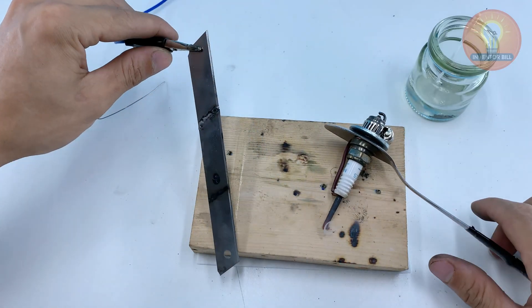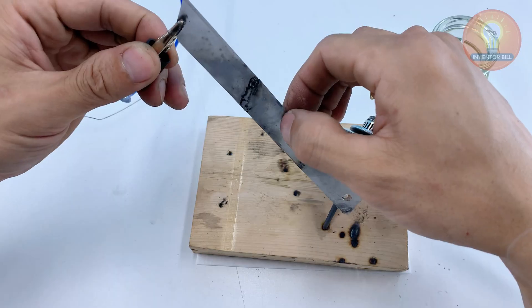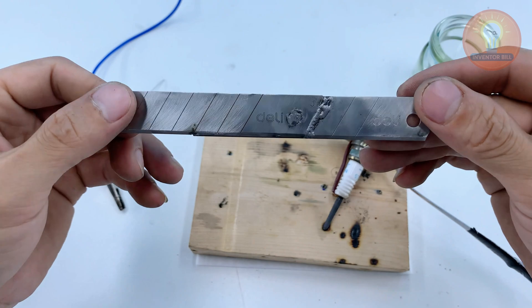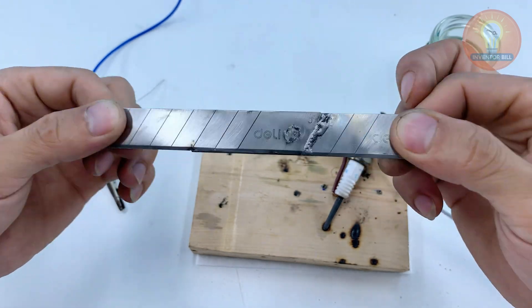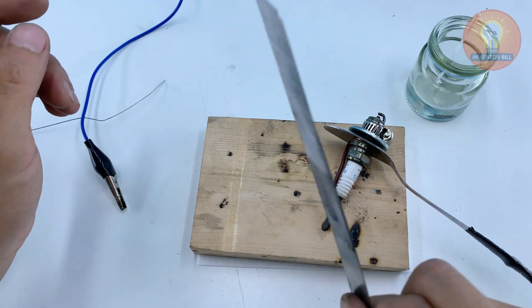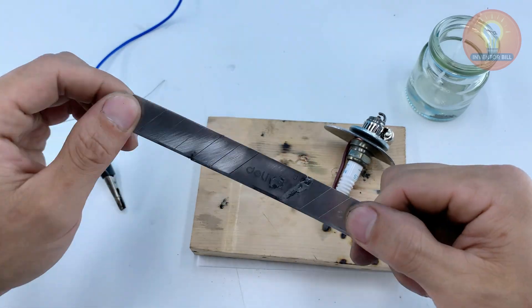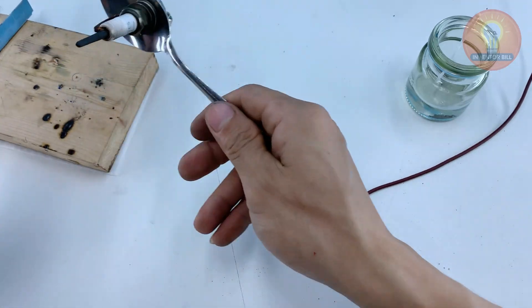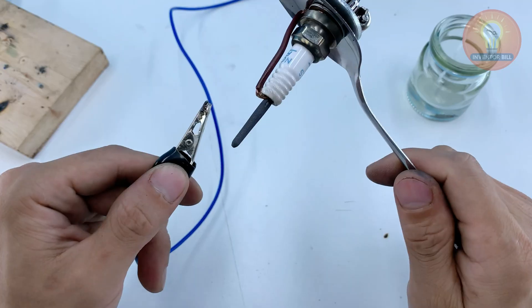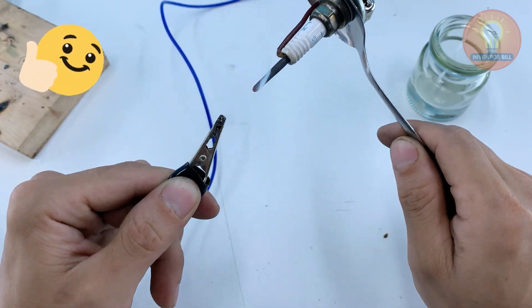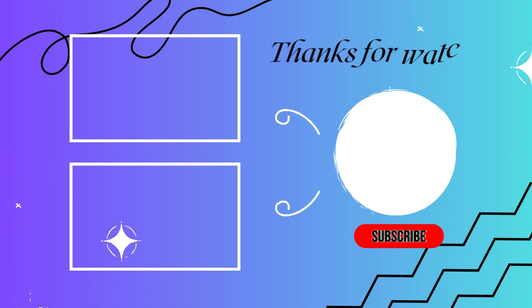When you see two razor blades bonded together with nothing but a homemade arc tip on a kitchen spoon, it really shows how far a little curiosity can take you. This simple setup proves you can still get solid, reliable welds even without a professional soldering iron. If you enjoyed this project and want more practical DIY ideas for your workshop, make sure you subscribe and leave a comment. I've got plenty more coming your way.